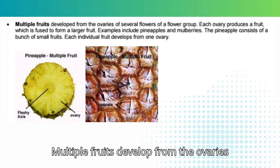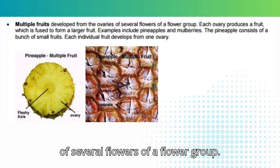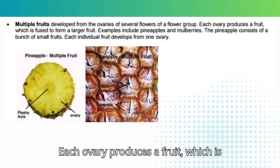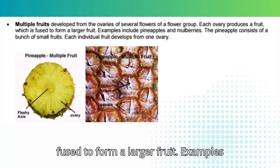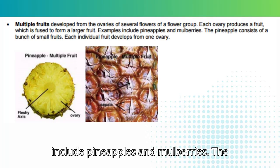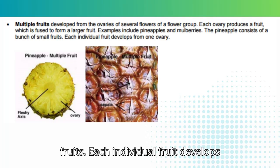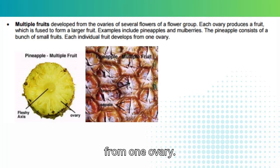Multiple fruits develop from the ovaries of several flowers of a flower group; each ovary produces a fruit which is fused to form a larger fruit. Examples include pineapples and mulberries. The pineapple consists of a bunch of small fruits, and each individual fruit develops from one ovary.